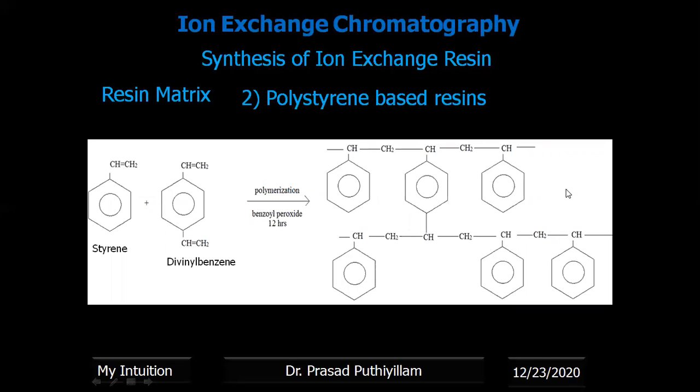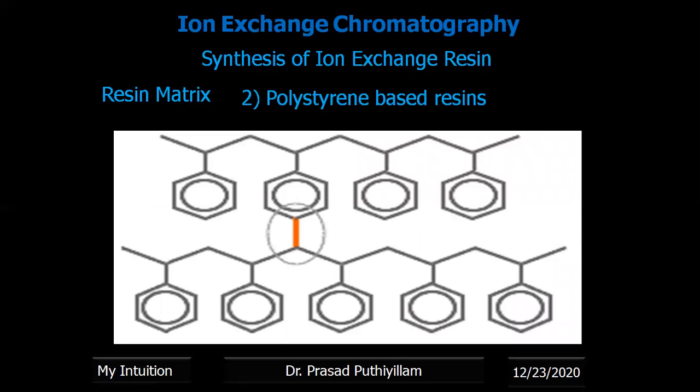The three-dimensional polystyrene structure is represented here, with the marked line representing the divinyl bondage. In actual practice, we obtain pearl-type polymers — separate beads in spherical form around 200 to 500 micrometers in diameter. Two types of polymerization methods are used in industry: batch polymerization and jetting polymerization. In batch polymerization, beads of different sizes are obtained, whereas in jetting polymerization, uniform-sized beads are produced.